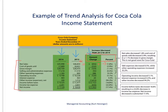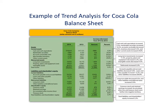Looking at a few key items: net sales went down by 1.8%, gross margin went down by 1.1%, operating income went down by 5.1%, and net income went down by 17.4%. That's what we do with trend analysis — take a look at what's going on with a company's financial information from one year to the next.